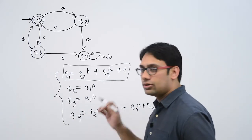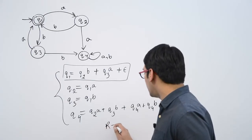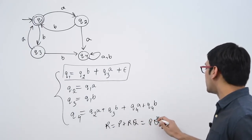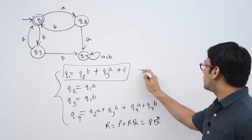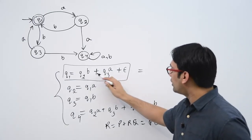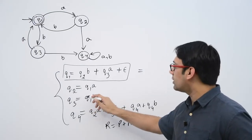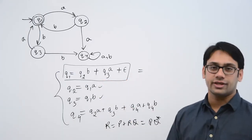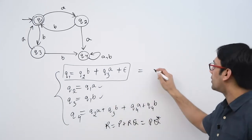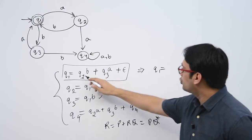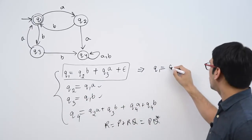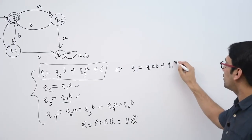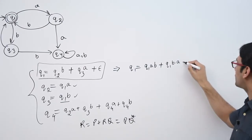We are going to extensively use the theorem: R = P + RQ can be written as PQ*, which is Arden's lemma. Now, we can replace Q2 and Q3 by their exact values. The first expression can be written as Q1 = Q2·B, and substituting Q2 = Q1·A gives Q1·A·B, plus Q3 which is Q1·B, so Q1 = Q1·AB + Q1·BA + epsilon.